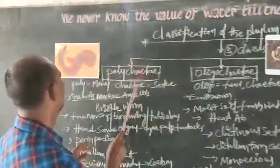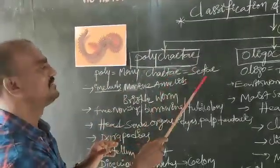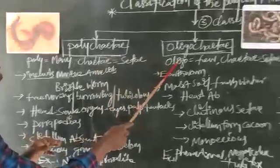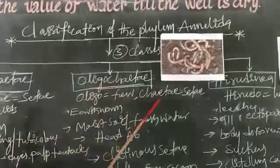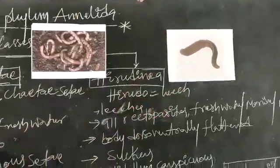Polychaeta - poly means many, chaeta means setae. Oligochaeta - oligo means few, chaeta means setae. Hirudinea means leech.